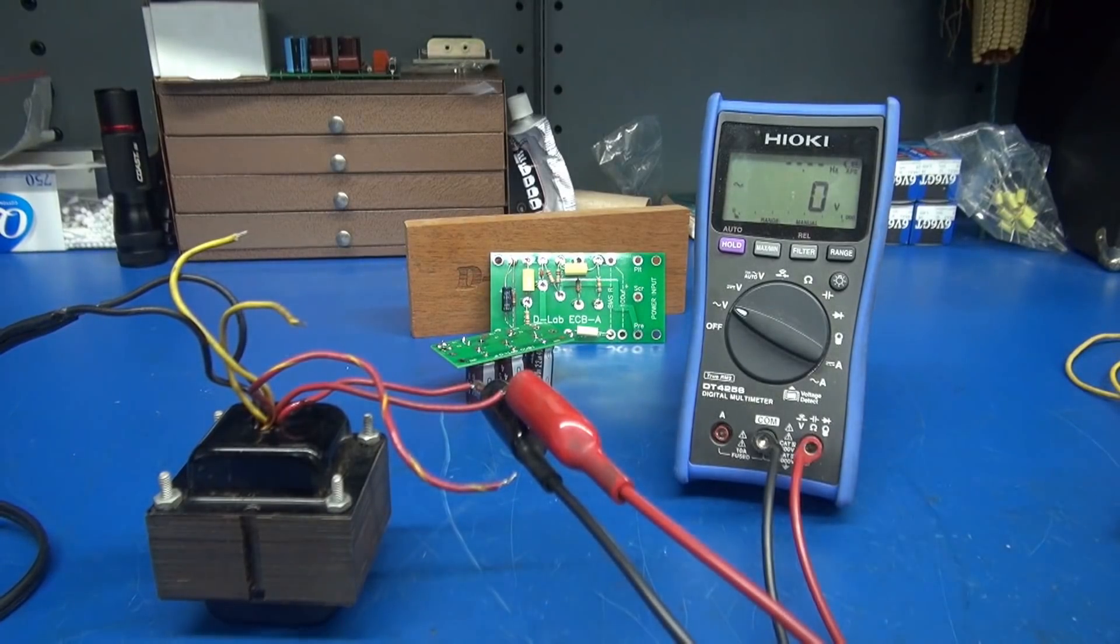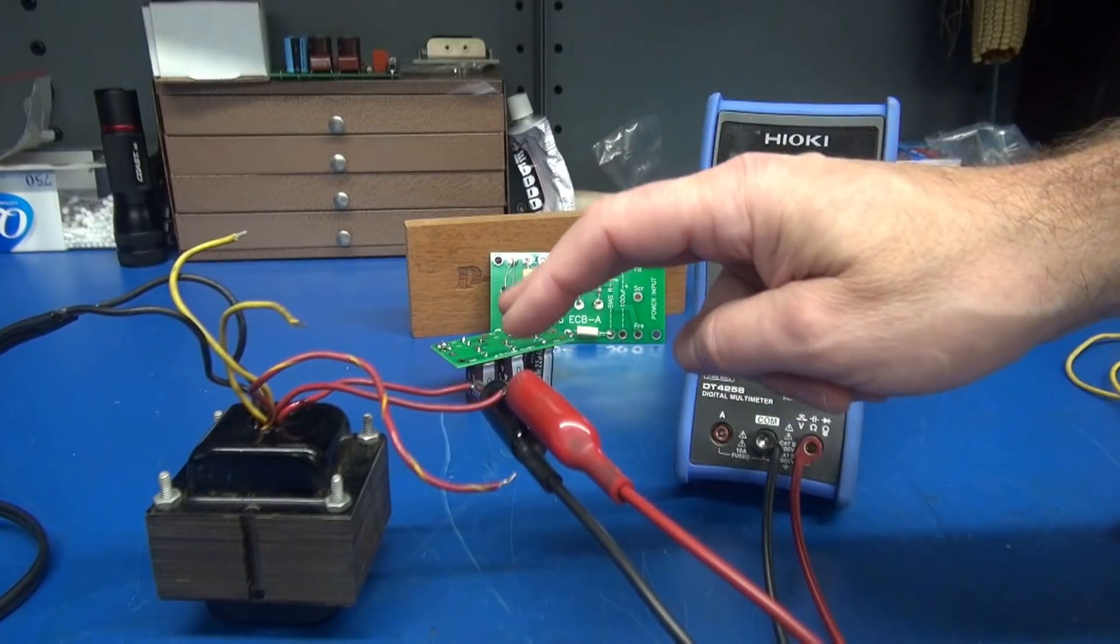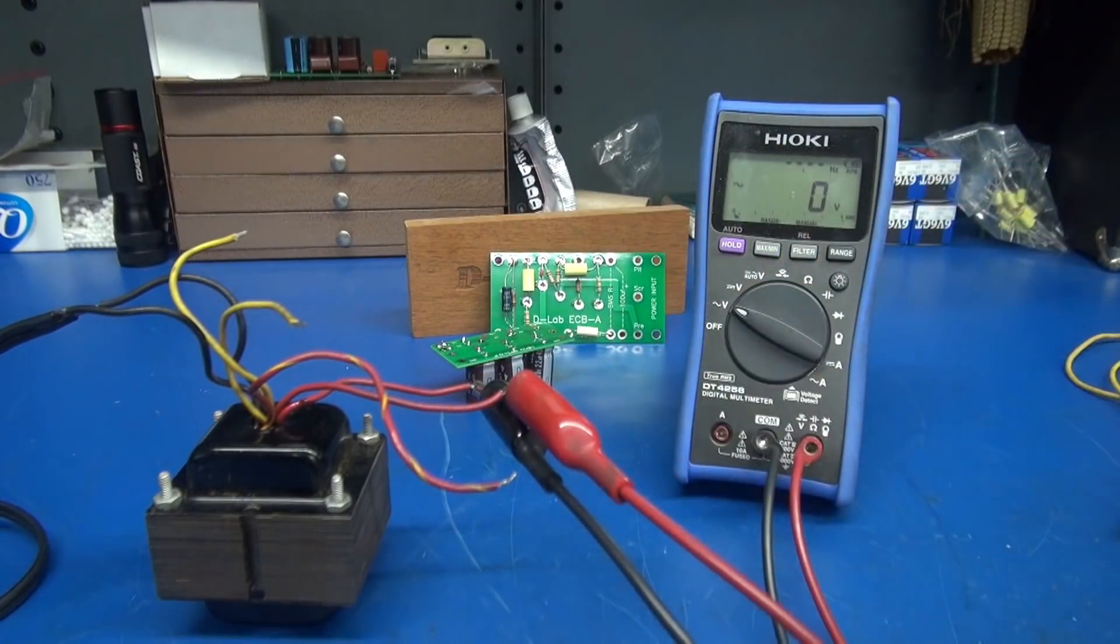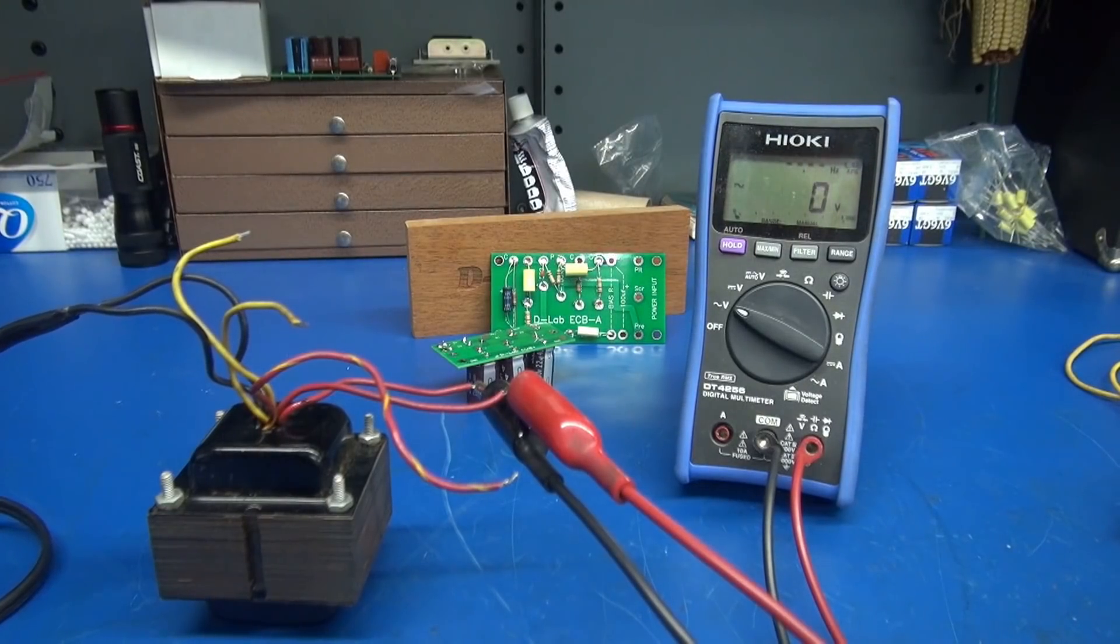So here's my transformer that I've chosen. It has a 6-volt winding and, of course, the high voltage with a center tap. So first, I'm going to plug it in so you can see the total high voltage which is 427 volts.